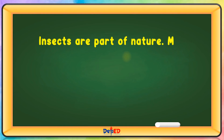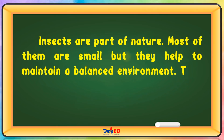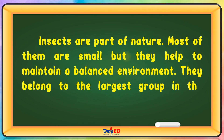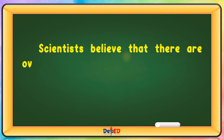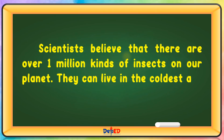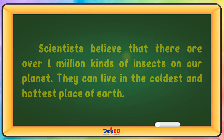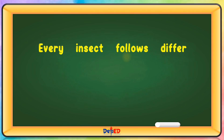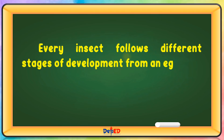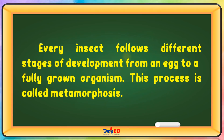Insects are parts of nature. Most of them are small, but they help to maintain a balanced environment. They belong to the largest group in the animal kingdom. Scientists believe that there are over 1 million kinds of insects on our planet. They can live in the coldest and hottest places on Earth. Every insect follows different stages of development from an egg to a fully grown organism. This process is called metamorphosis.